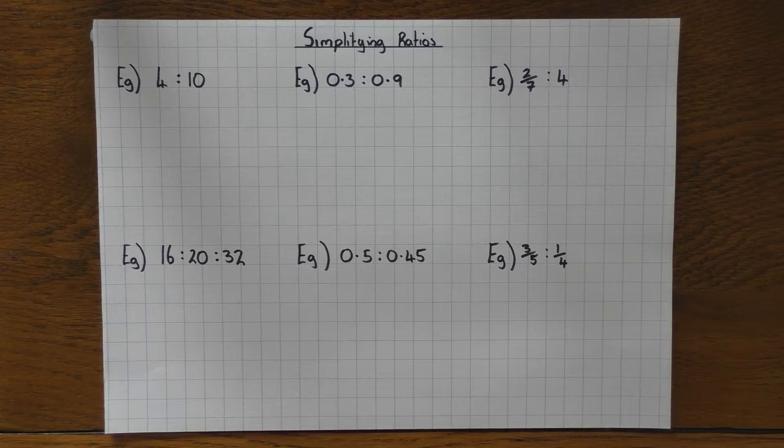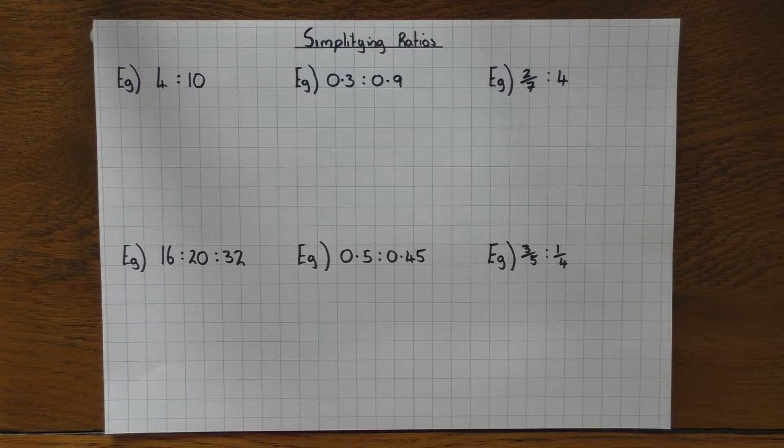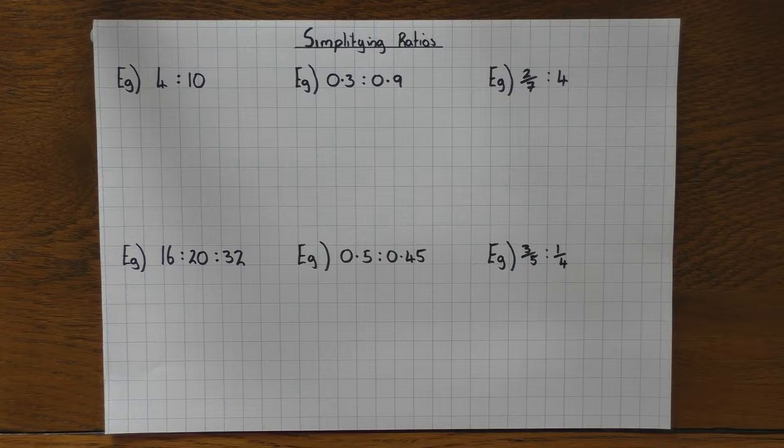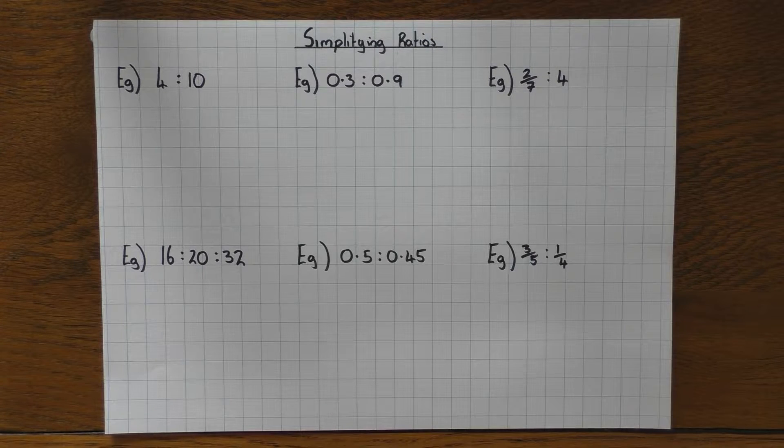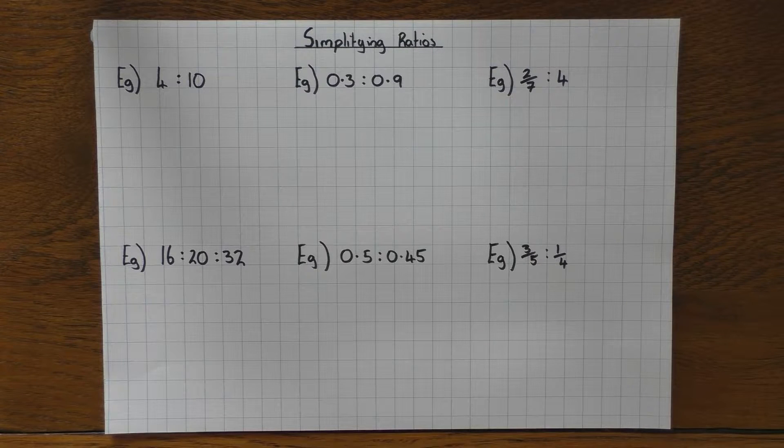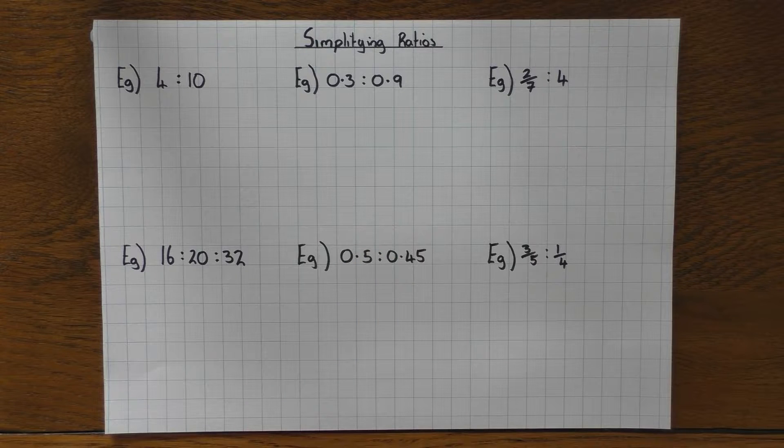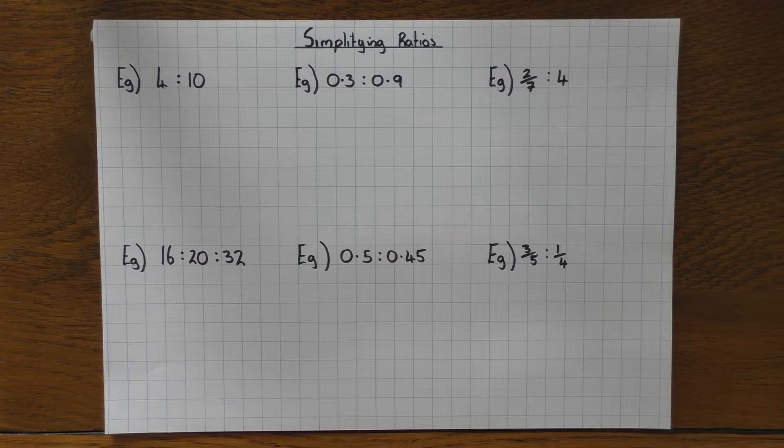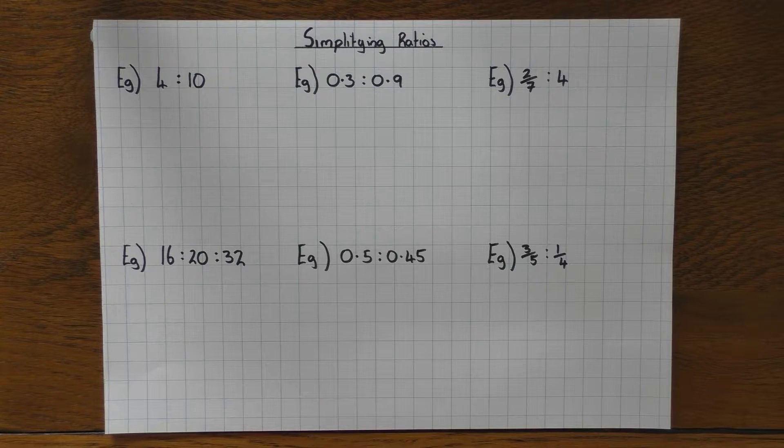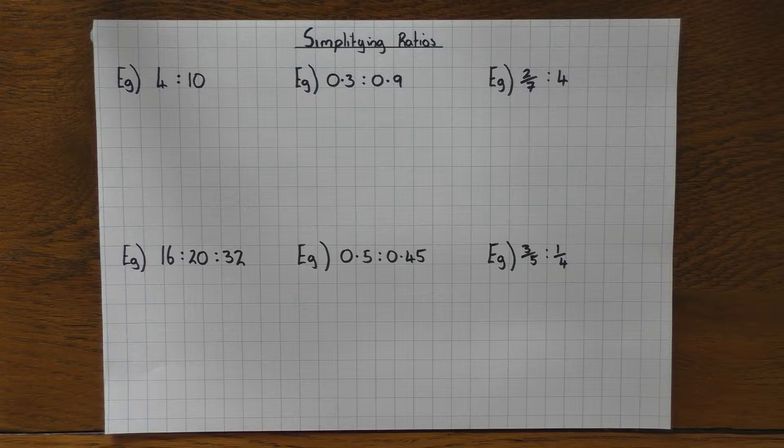Hi guys, in this video we're going to have a look at simplifying ratios. Simplifying ratios is very similar to simplifying fractions. We need to look for common factors, or ideally the highest common factor to simplify our answers. We're also going to be looking at how to do it with decimals and with fractions, with different units and getting ratios in the form of 1 to n. So if you want to skip ahead to some of that, that's absolutely fine.